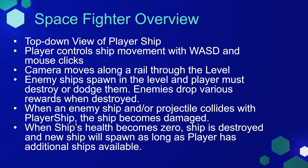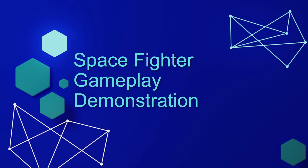The game we're going to be making is a top-down view of a player ship. The player controls the ship movement with WASD and mouse clicks. The camera in our game is going to be moving along a rail through the level. Enemy ships will spawn in the level and the player must destroy or dodge them. The enemies will drop various rewards when they're destroyed. When an enemy ship or projectile collides with the player ship, the ship becomes damaged. And when the player ship's health becomes zero, the ship is destroyed and a new ship will spawn as long as the player has additional ships available.